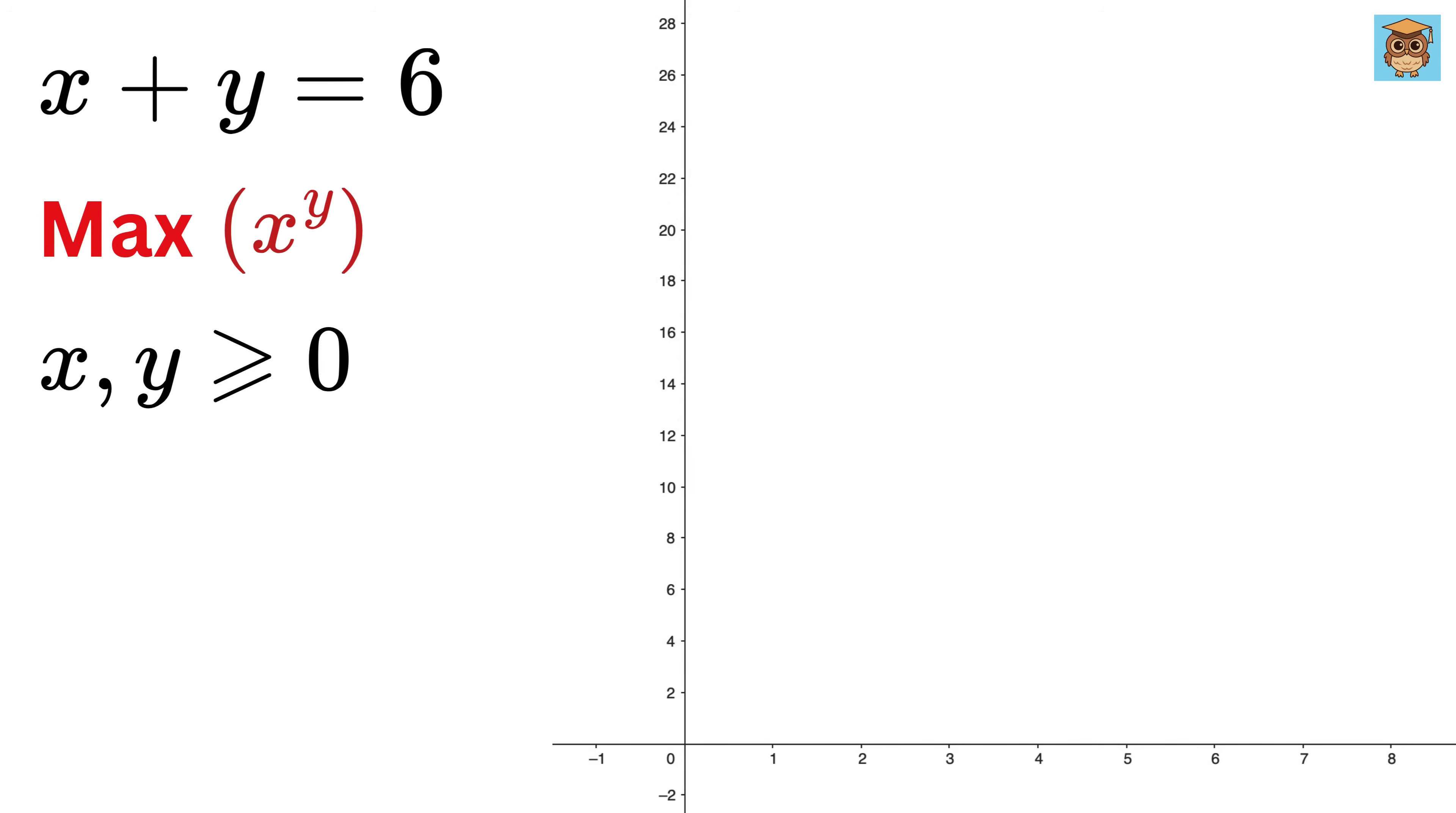If we draw a graph of x to the power y using different values of x and y, such that their sum is 6, we will see a curve that first increases, hits a peak, and then decreases.